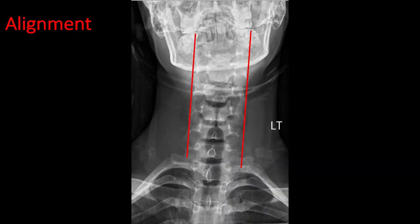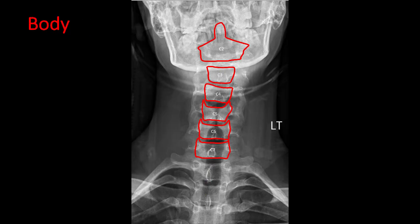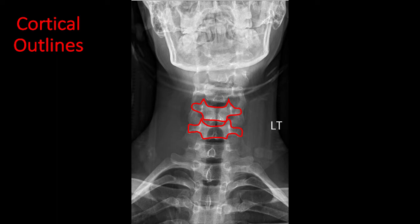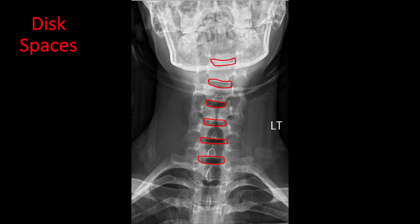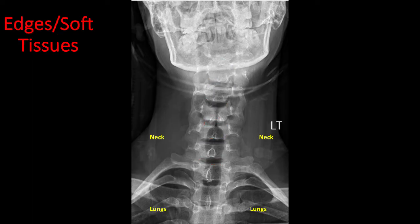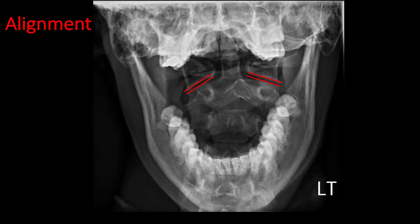In the AP view, the lateral edges of the vertebral body should form continuous parallel lines. The spinous processes should be spaced out evenly and should form a straight line. Check the height of the vertebral bodies and trace the cortical outline of each vertebra for any fracture. The intervertebral disc spaces should be more or less the same height. Assess the soft tissues of the neck for any emphysema and lung apices for any pneumothorax, mass, or rib fractures.